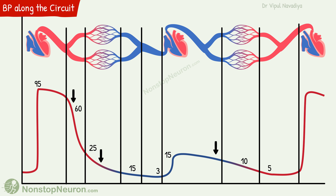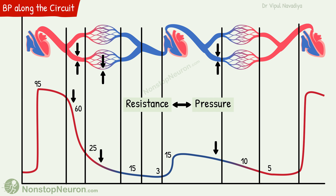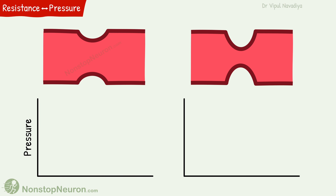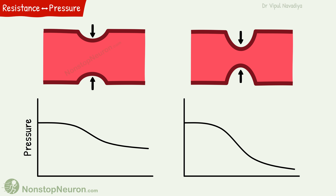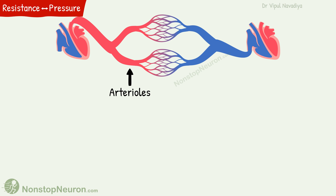We can easily see the pressure drop occurring at various levels in this graph. The profile of pressure drop depends mainly on resistance at different levels. At any level of branching, the greater the resistance, the greater the fall in pressure. For example, a vessel with lesser resistance shows a smaller fall in pressure, while a vessel with greater resistance shows a greater fall. In the systemic circulation, the greatest vascular resistance occurs at the arterioles — so that is where we see the steepest pressure drop.